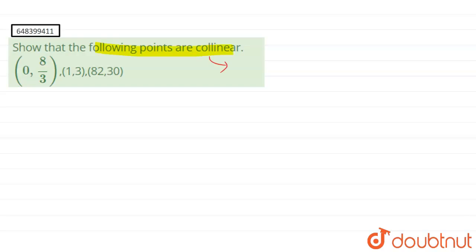Collinear points indicate that the area of the triangle formed by the three points will be zero.